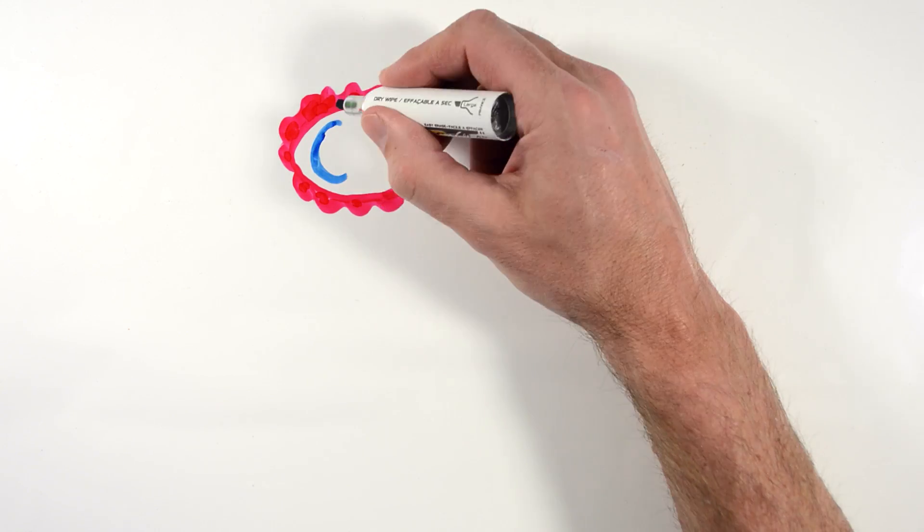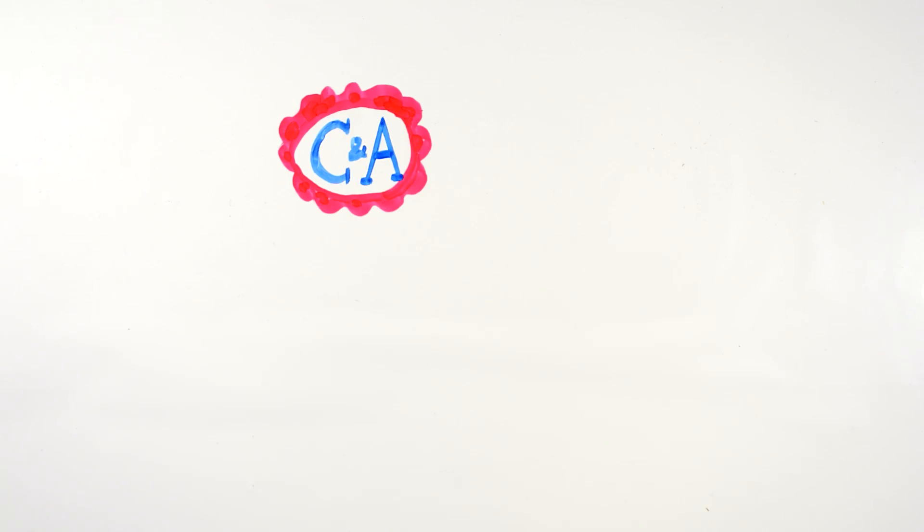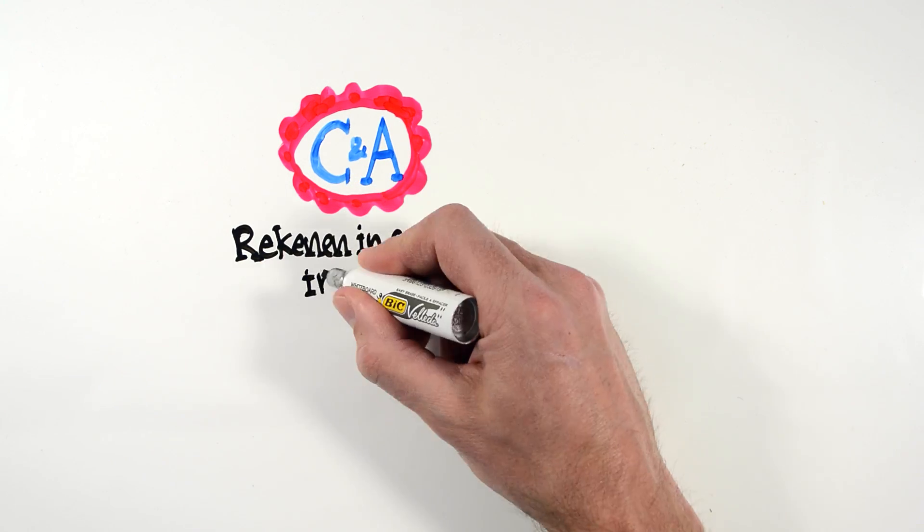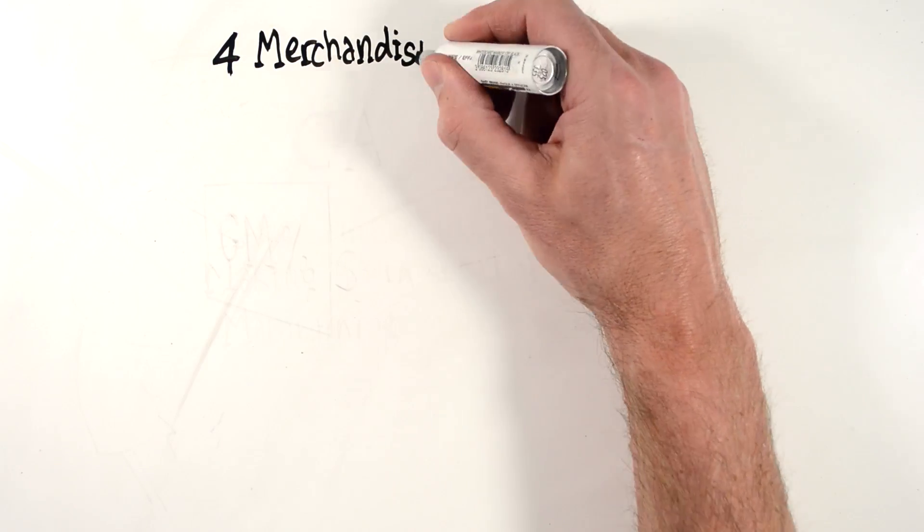CNA's unconventional German merchandising method is quite different from basic retail theory. The Dutch name is rekenen in centen in plaats van porcenten. In English, making money instead of maintaining margins. Basically, in merchandising, there are four different systems.